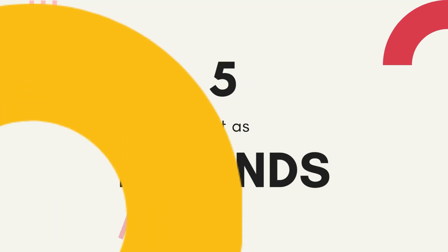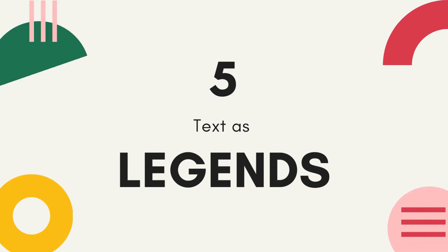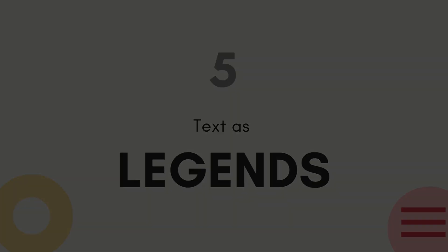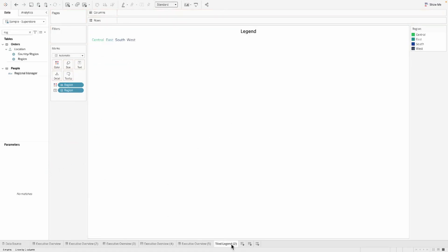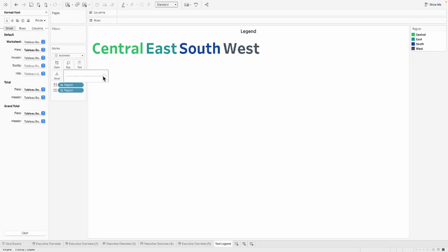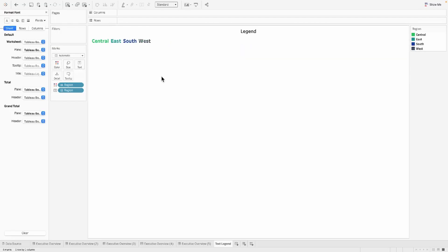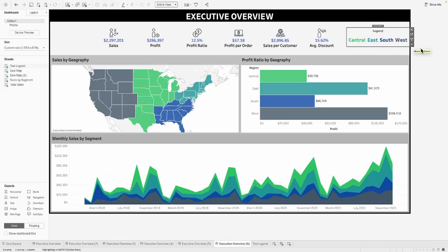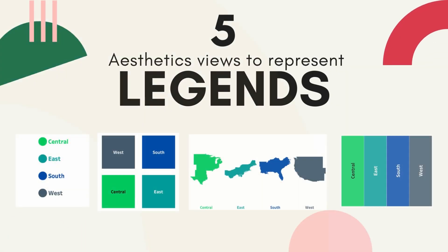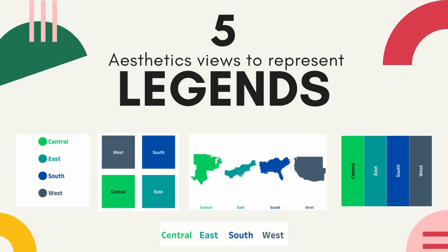The last and the final one is the most simplest to build, but it really helps to convey the story to the users — where we are simply going to use the text as a legend. For this, we will just pull out everything from the rows and columns, and this is how it looks like. You can adjust the size of it and simply pull this onto your dashboard, and your dashboard would convey what each of the colors represent in a very simple and easy to understand way.